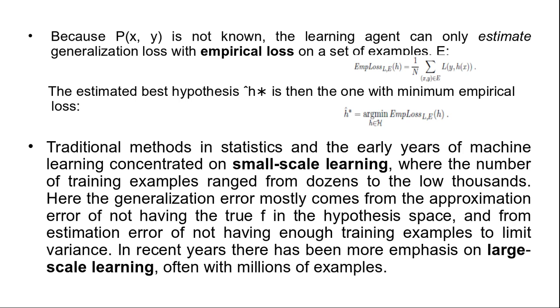There are four reasons why ĥ* may differ from the true function f. Unrealizability, variance, noise, and computational complexity. First, f may not be realizable, may not be in H, or may be present in such a way that other hypotheses are preferred.